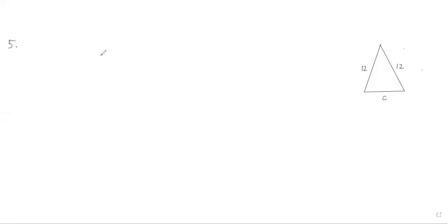Okay, question number five. We have an isosceles triangle. The perimeter is 30.